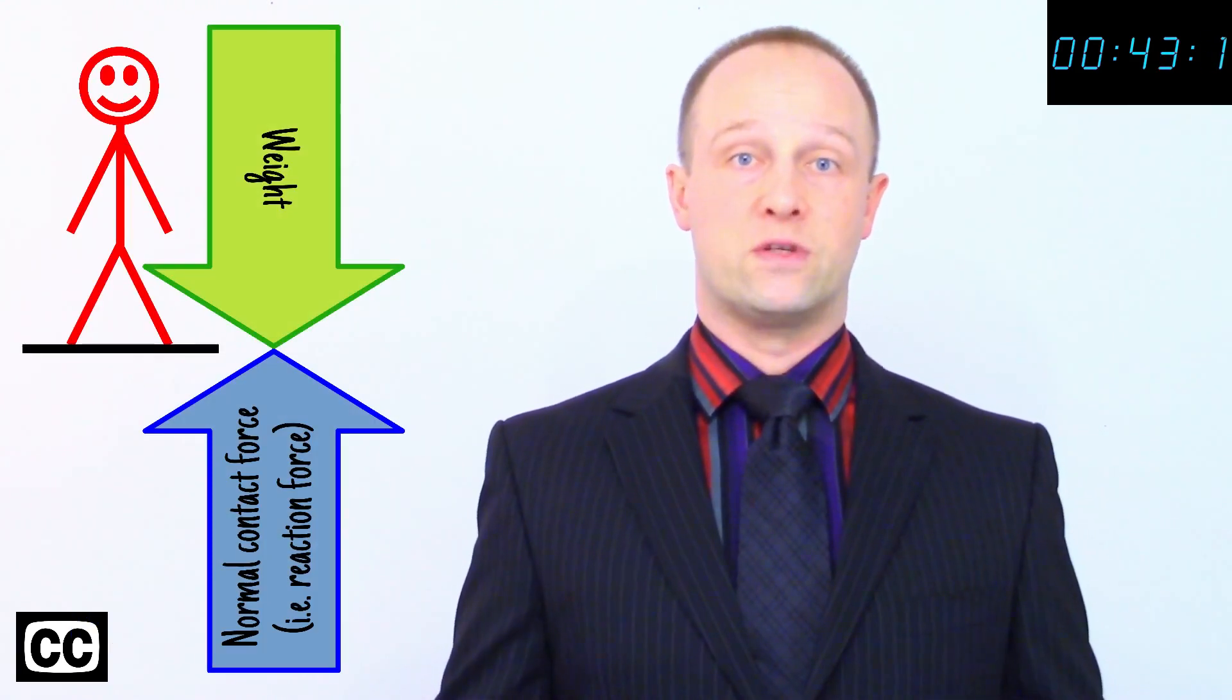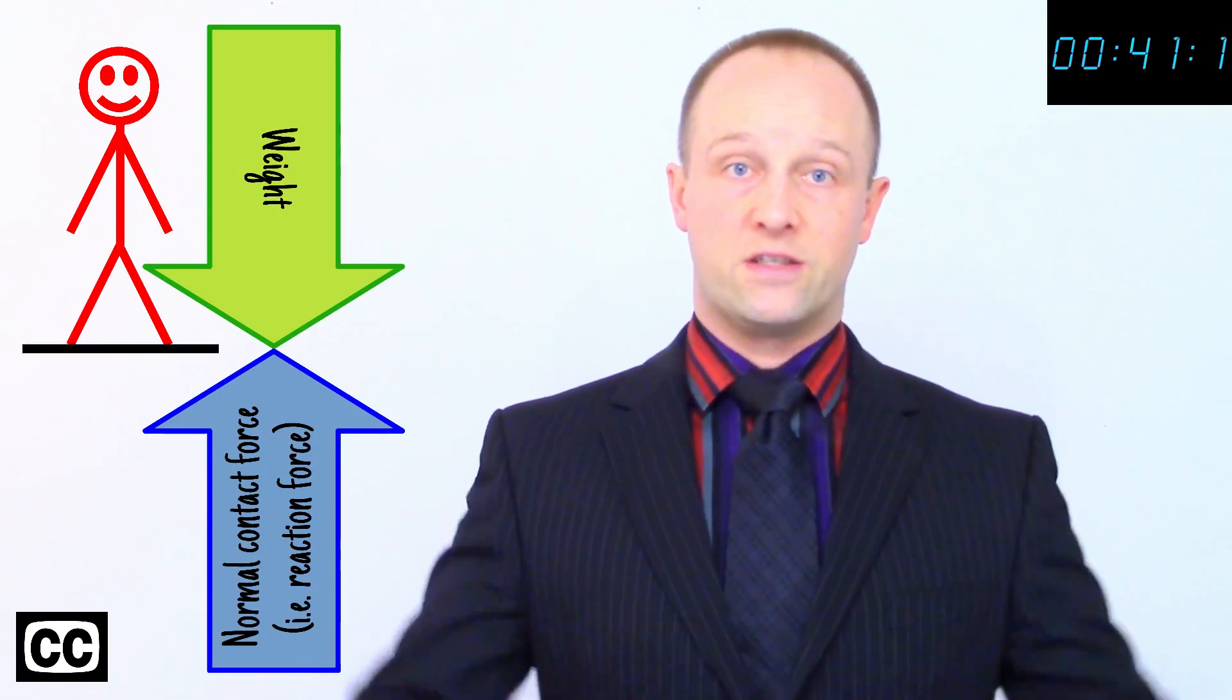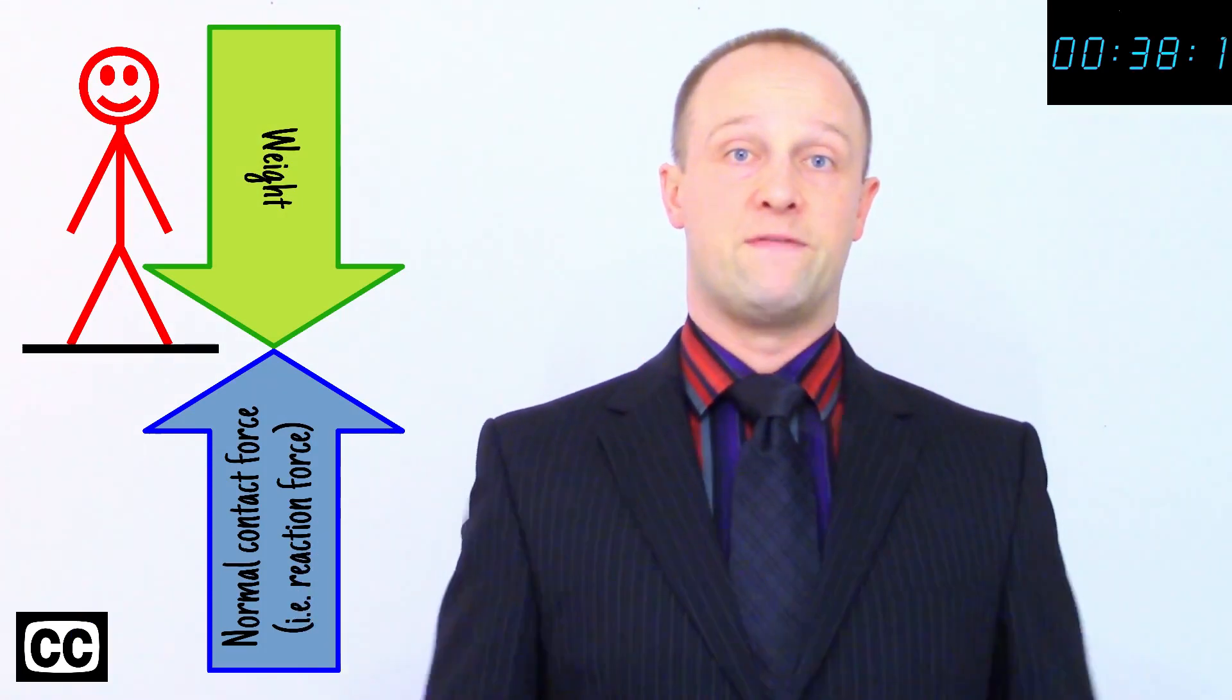When two objects interact, a pair of opposing forces are produced, one on each object, such as my weight being opposed by the normal contact force from the floor.